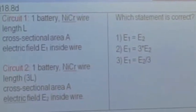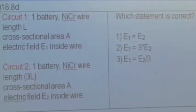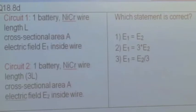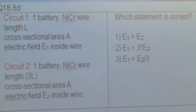The first question: let's say you have two different circuits. Circuit number one has one battery and a wire made of nichrome — a nickel and chromium alloy with a fairly low mobility, so we get measurable currents that aren't too high. The nichrome wire has length L, cross-sectional area A, and the electric field inside the wire is E1.